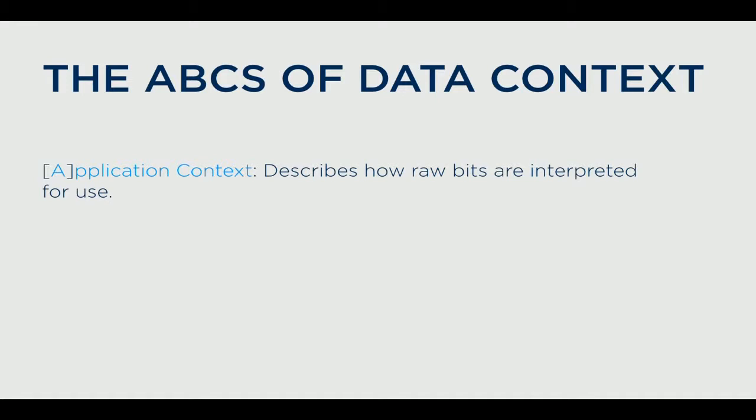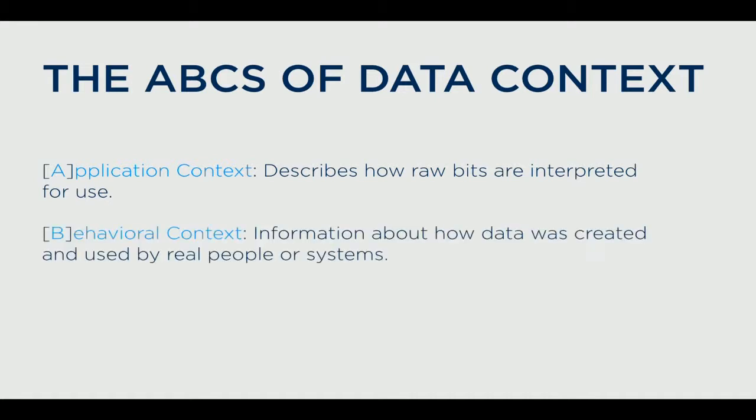The second kind of data context is the behavioral context — information about how data was created and used by real people and systems. When we have more people touching data and generating new data and building applications that depend on data, sometimes for regulatory reasons and sometimes to capture what people call tribal knowledge, we want to understand who's touching data, what they're doing with it, what environment they're running, and what code is being run on what data.